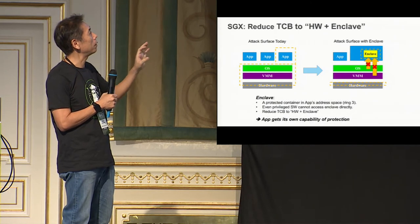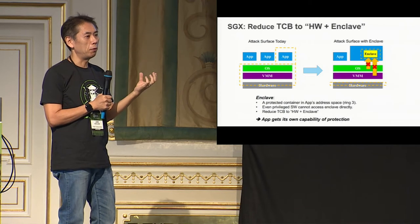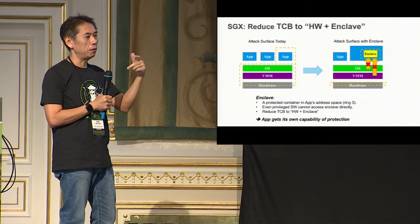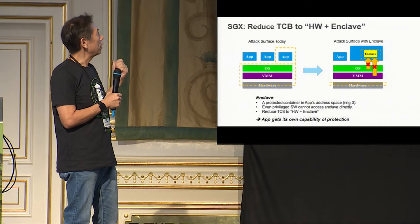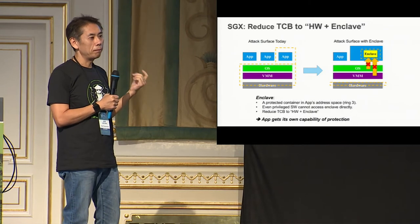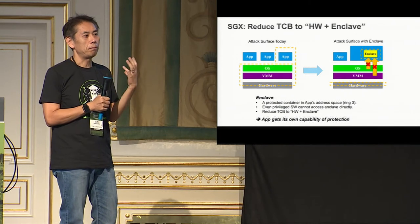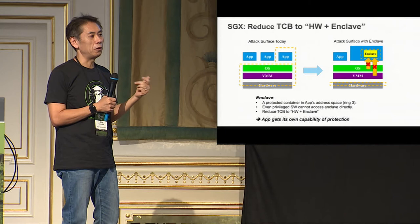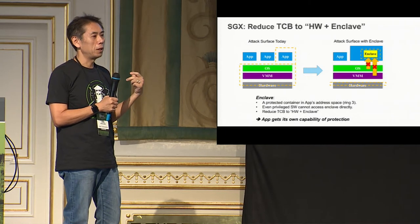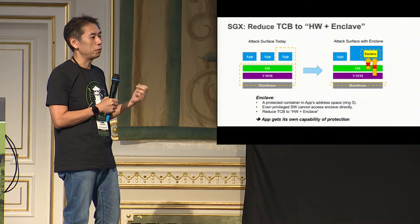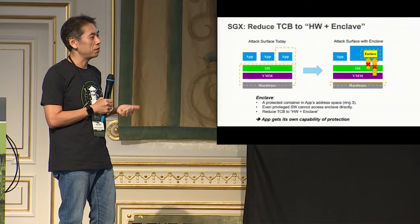I'll talk about enclave more — it's essentially the Ring 3 component within your application. Even if the OS or VMM are not really malicious, sometimes an attacker can use exploits to leverage the OS or VMM to attack applications or VMs to steal sensitive information or data. That's the reason we have SDX.